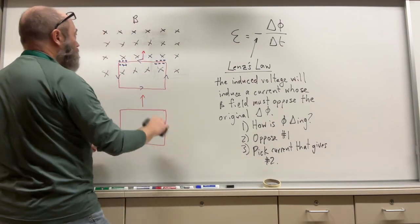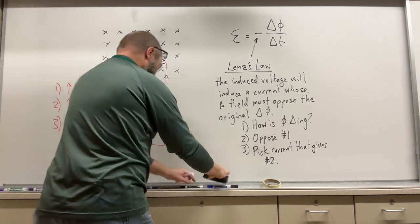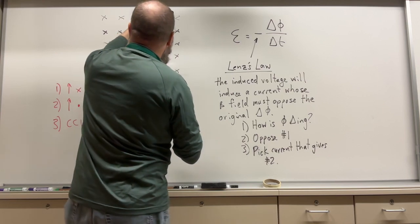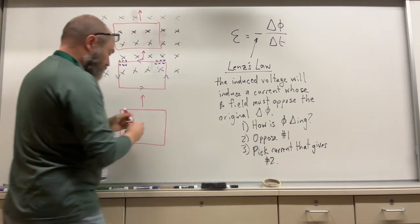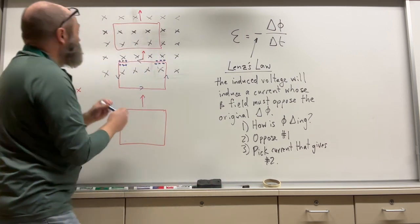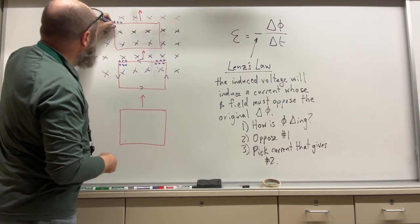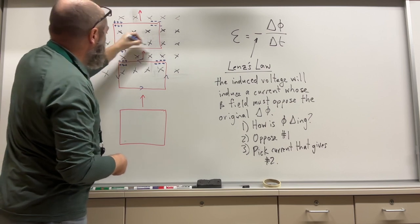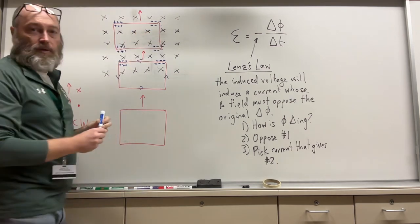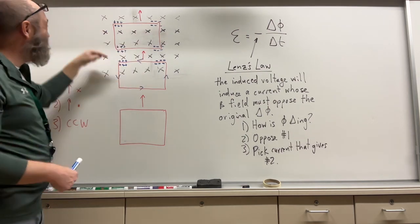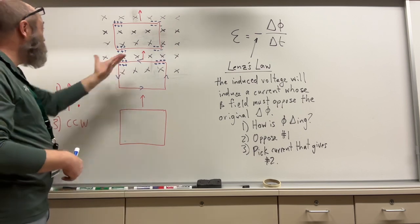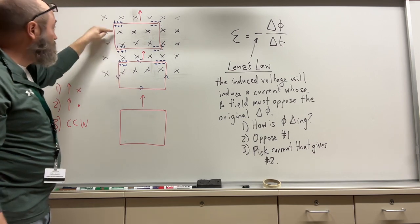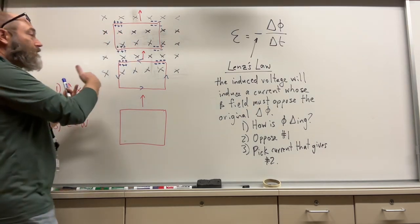If I draw it when it's fully in the loop and it's still moving, I'm going to get positive charge building up on one side and negative on the other — but also the same thing on the opposite wire. So there's no net current to flow, because there's no change in flux when the loop is fully inside the magnetic field. The positive charges won't flow because both sides are equally positive — there's no reason to go that way.